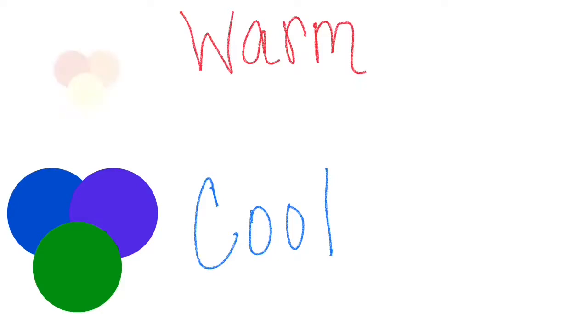Here are the warm and cool colors. The warm colors represent things that are usually warm: red, orange and yellow. The cool colors represent things that are usually cool: blue, violet and green.